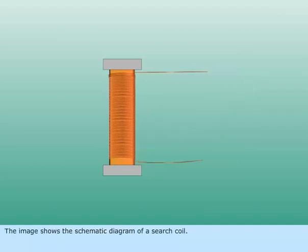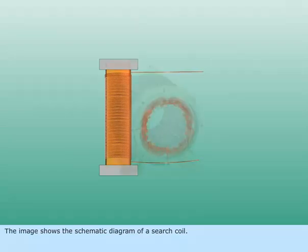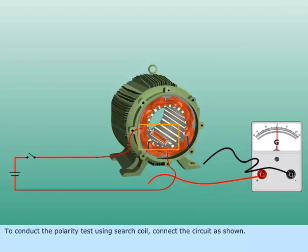The image shows the schematic diagram of a search coil. To conduct the polarity test using search coil, connect the circuit as shown.